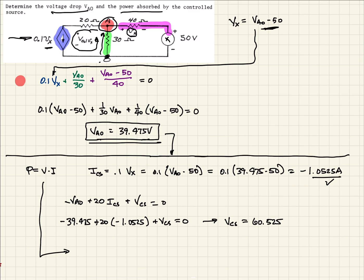So now, coming back to our power, the power of our current source is going to be equal to V times I. And so that's going to be 60.525 times the current, which we again found right here. So that's going to be negative 1.0525. And when we multiply that out, we should get negative 63.703 watts.